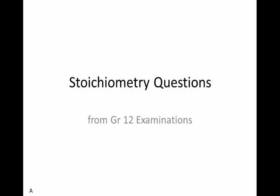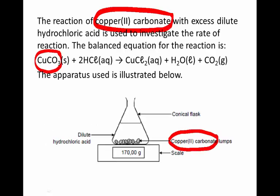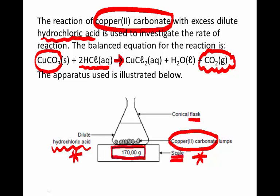Let's answer a question from an old grade 12 exam paper about percentage purity. Some copper carbonate is reacted with excess dilute hydrochloric acid to produce copper chloride, water, and carbon dioxide. The flask into which the two reactants are placed is put onto a scale. Why is that done?